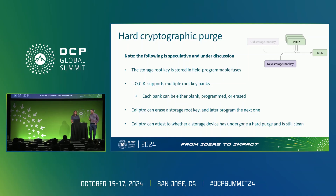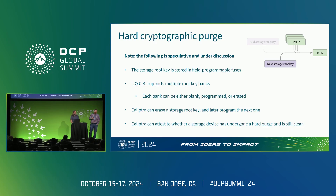Hard cryptographic purge: this is still under discussion, but the idea is that the storage root key could be rotated. It's stored in fuses, so you can't rotate it too often, but once you've blown all the fuses for the old one and programmed the new one, it is much harder for a nation-state adversary to invasively recover the old key versus if it were in flash or on a magnetic platter. We would support multiple root key banks — maybe on the order of four. Calyptra could erase one and program the next. For attestation, we want the drive to be able to attest: did I undergo a crypto erase and am I still clean? So one party does the crypto erase and another party elsewhere can verify it happened, and Calyptra is in a position to do this storage root key rotation.